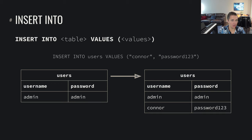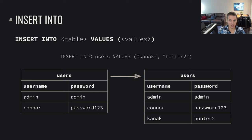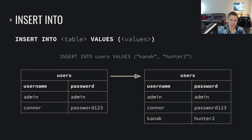If we continue inserting more data, every time we perform one of these operations we're inserting another row into the table. Now we have Connor with password123, and finally we add Kanak with Hunter2 as a password. So we've got this table set up with three users, each with a unique username and password.